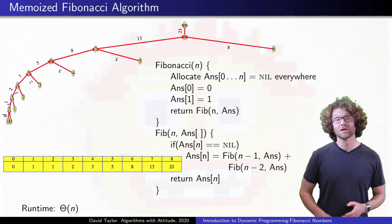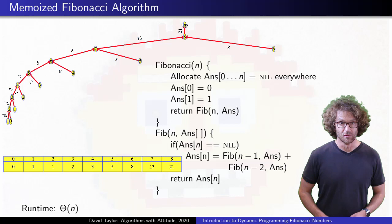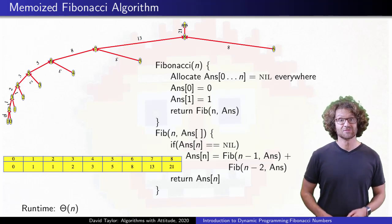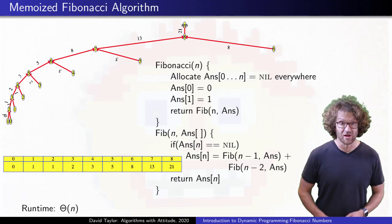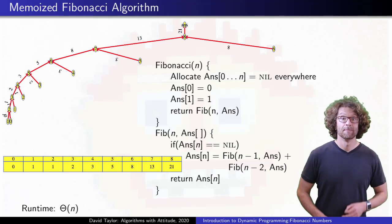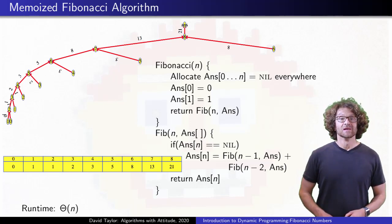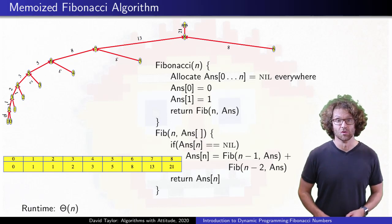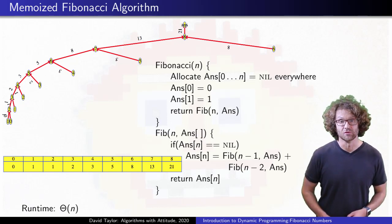The table is like a well organized bunch of post-it notes, or memos, and this method is called memoization, not memorization, memoization. It allows you to keep the same natural recursive structure in your code, but it keeps you from recomputing values.